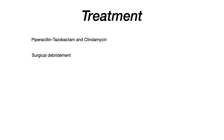Treatment: very important to know that if myonecrosis occurs, you need surgery first and foremost. The antibiotic choice is piperacillin-tazobactam combined with clindamycin. So if they give you myonecrosis, the answer is surgical debridement, but you also need those antibiotics.